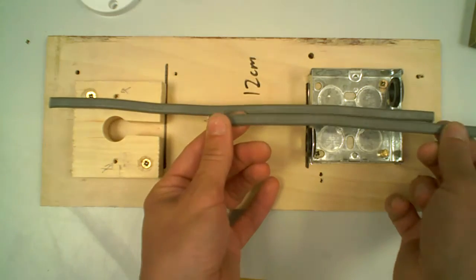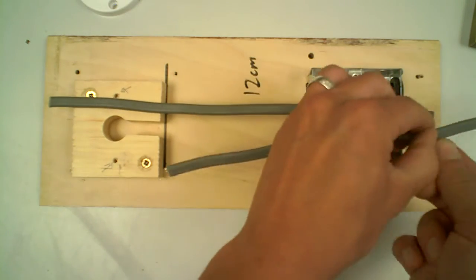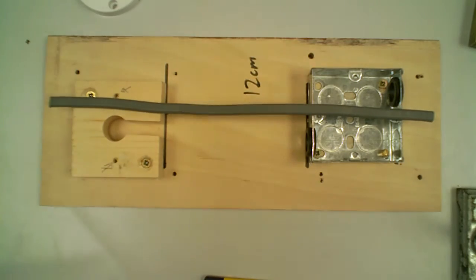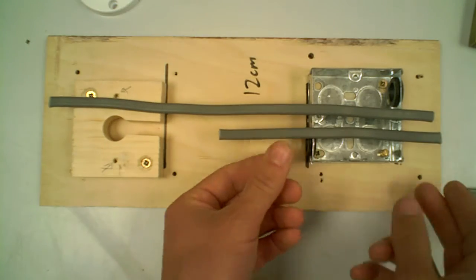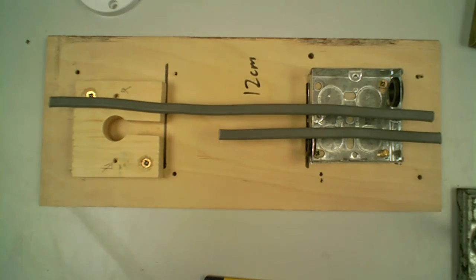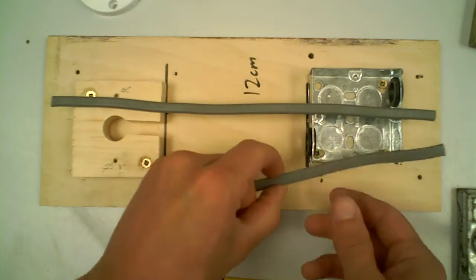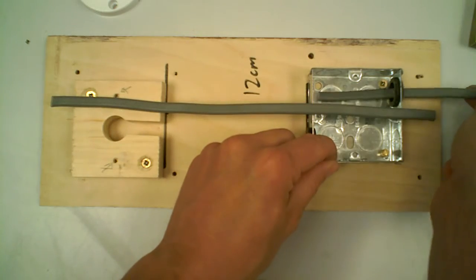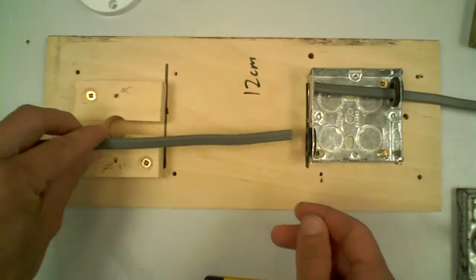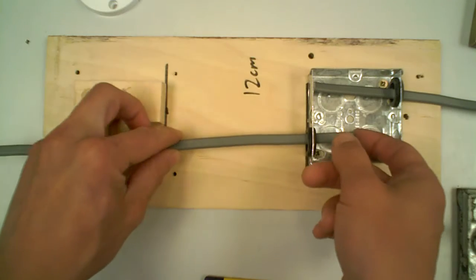But about 20 centimeters should just nicely do us, so I'll trim that one down just to get it right length. Okay, so a slightly shorter section there. Now what we're going to do with this is we're going to put the short section in through the bottom there and we're going to put the longer section in through the top of the socket.